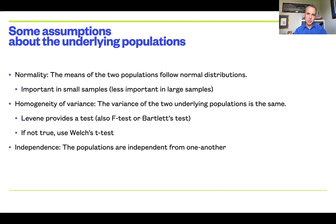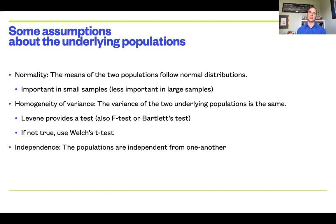Typically the distribution of those sample means will be normally distributed, especially when we use very large sample sizes. The central limits theorem says this will eventually become true. Also, if the underlying population is itself normal, then the distribution of sample means will be normal. It is an assumption of the t-test that the distribution of sample means needs to be normally distributed, because that's how the whole thing works.